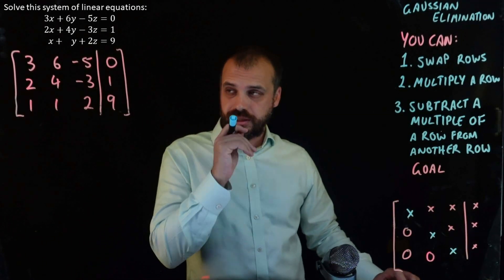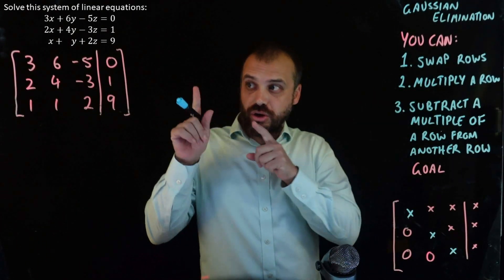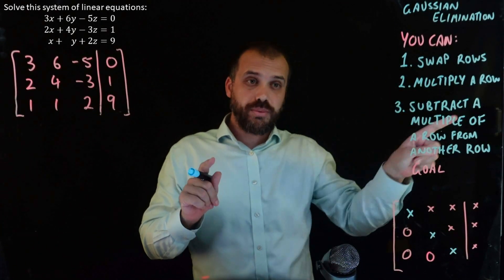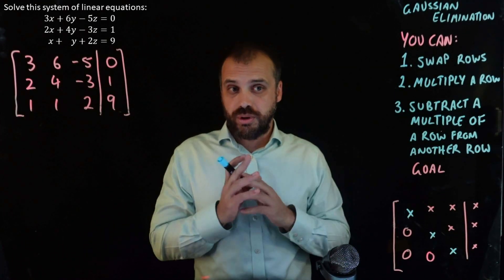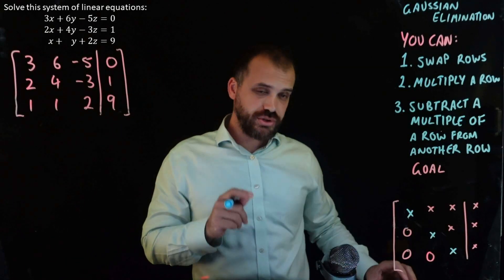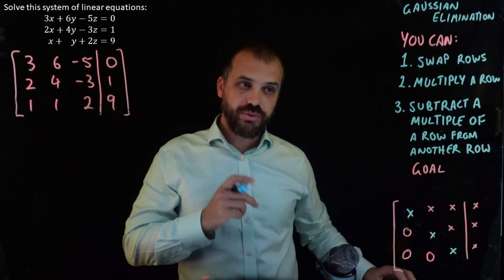So let's start operating. Now for reasons that will soon become clear, my first operation on this particular one is to swap rows. Now you don't always have to swap rows. Very rarely do you have to swap rows, but I'm going to swap rows on this one. I'm going to swap row one and row three.